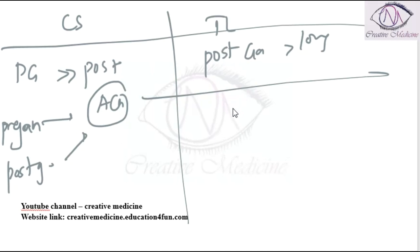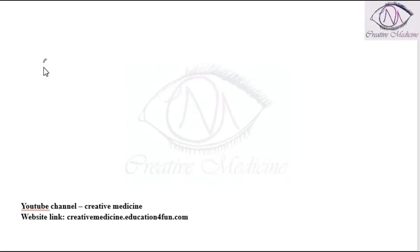But the postganglionic neurotransmitter in the thoracolumbar system is noradrenaline. Sweat glands are sympathetic cholinergic innervation. Sweat glands have sympathetic cholinergic innervation, whereas the adrenal medulla will release adrenalin as the neurotransmitter.